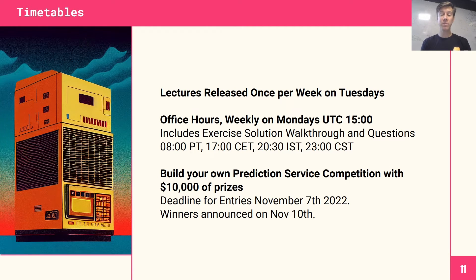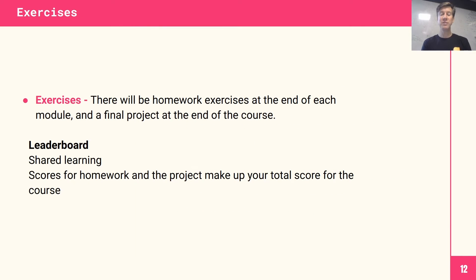The project we'll build at the end is basically your own prediction service. If you have an idea for a prediction service now, there's nothing to stop you starting today. A week after the end of the course, there will be a deadline for a competition for who can build the best serverless prediction service, and there's $10,000 of prizes sponsored by HopsWorks. We'll announce the winners shortly after the deadline for entries. The course will also include homework exercises at the end of each module, and the final project where we'll have prizes.